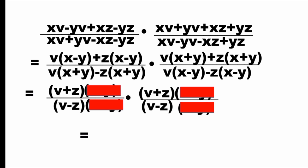It is clear now that both numerators contain v plus z and in the denominator v minus z. So, the final answer is v plus z squared over v minus z squared.